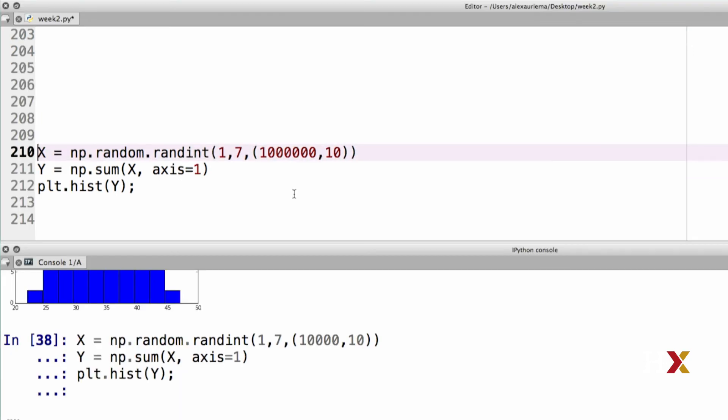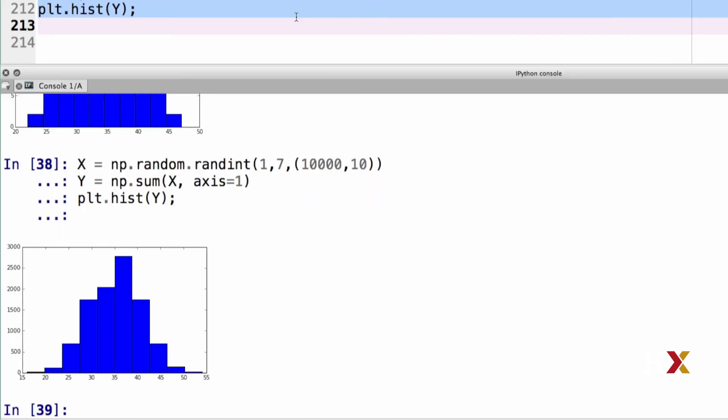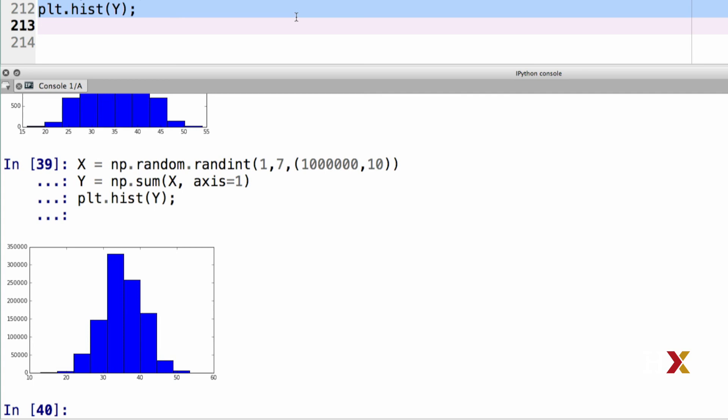I can further increase the size of the table to one million. Remember, in this case, we are generating one million realizations of variable y. And the histogram looks even more smooth in this case. You can see that this code is shorter than our previous code for the same example that didn't make use of NumPy. Another difference you've probably noticed is that this code is much faster. Generally, using NumPy can result in code that runs over 10 times faster than standard Python code. In scientific computation, this makes a big difference.